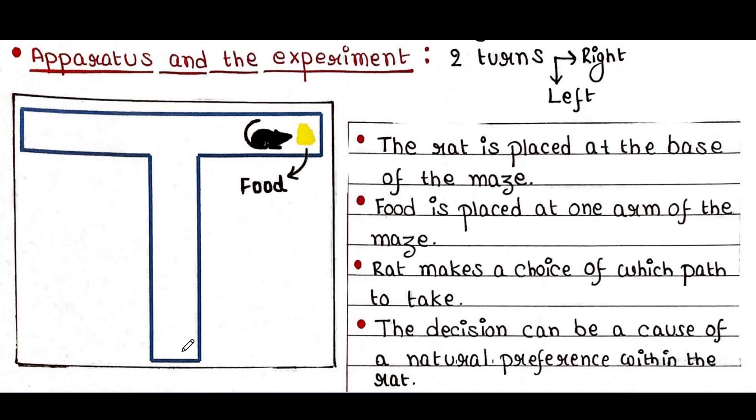A reward such as food is placed at one arm of the maze. In this case, we've kept food in the right arm. The rat placed at the base is now allowed to make a choice of which path to take—it will turn right or left.